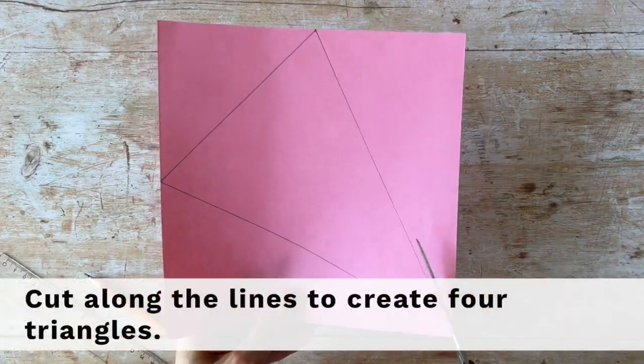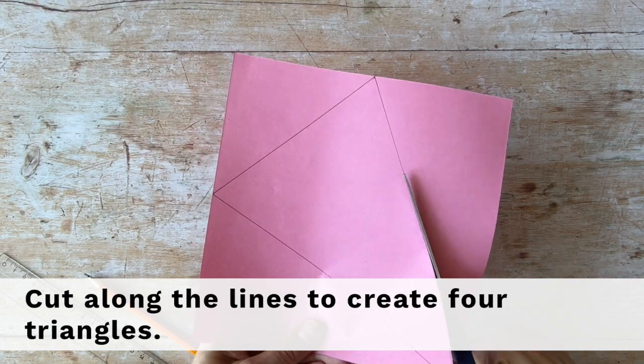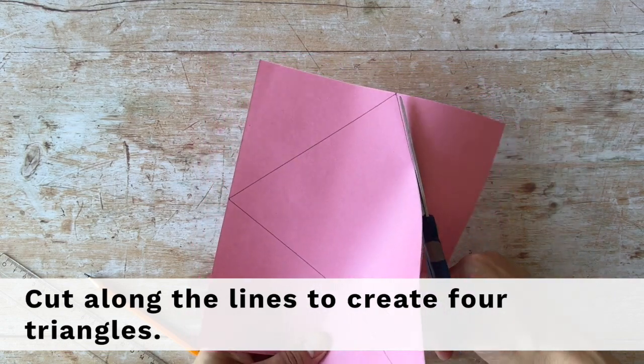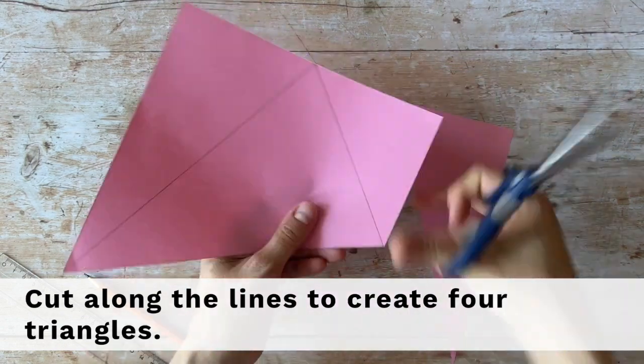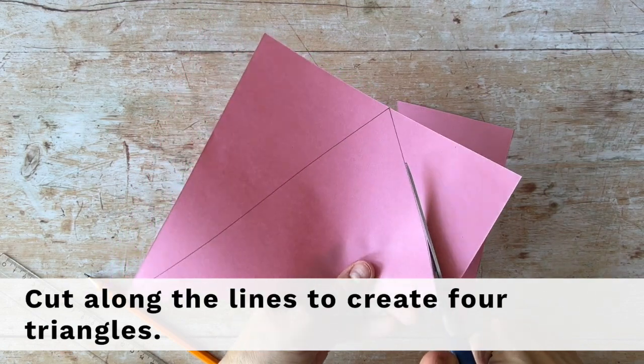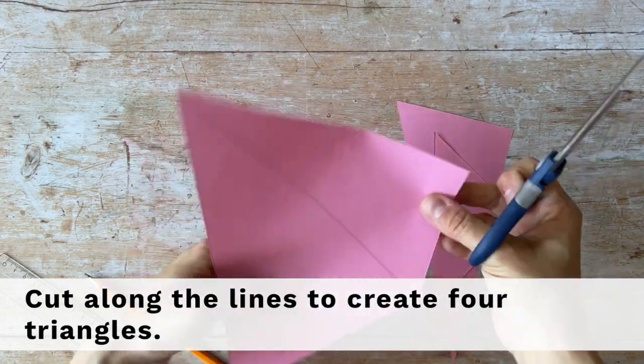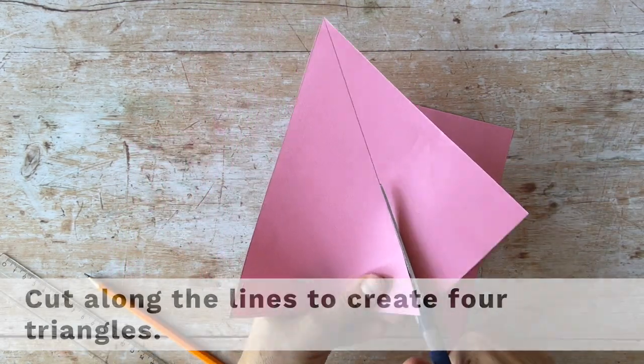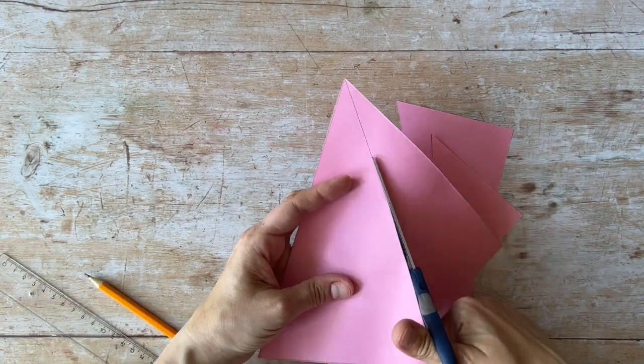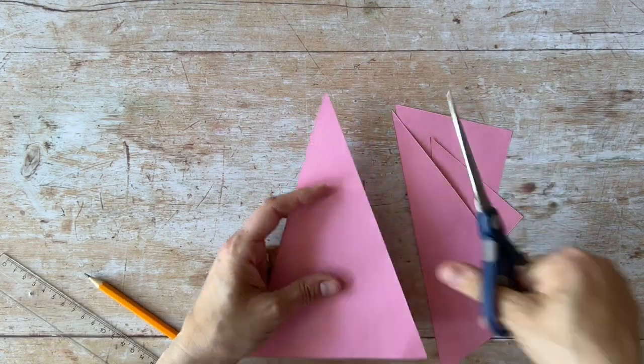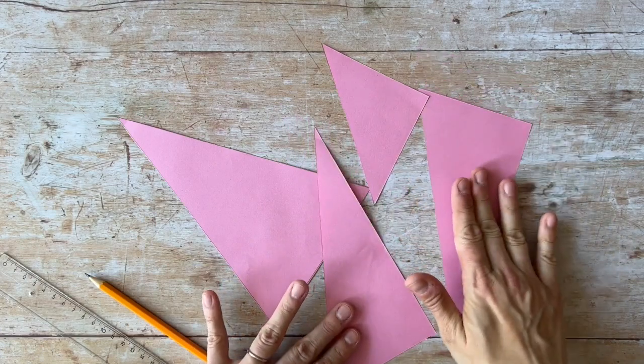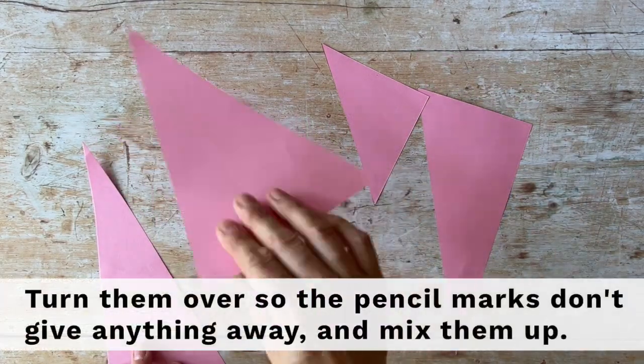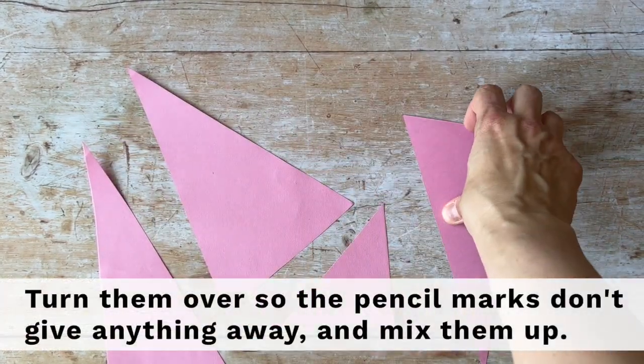Cut along the lines to create four triangles. Turn them over so the pencil marks don't give anything away and mix them up.